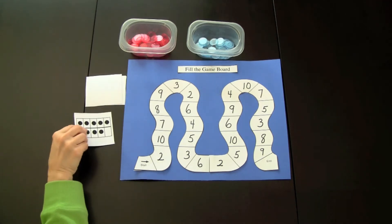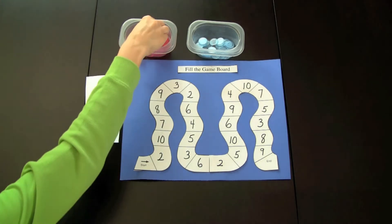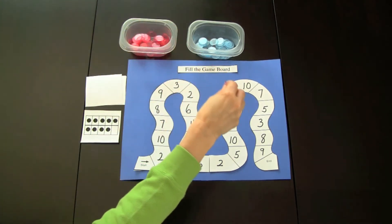Player 1 picks up a card. They have selected the 9 frame card. So they would take their color bingo chip and place it on the number 9.